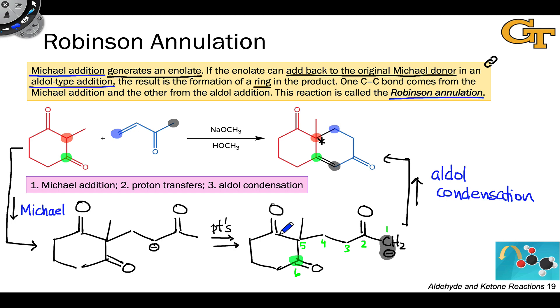Synthetically, the Robinson annulation is also fabulous, since we have a carbonyl group that remains in the product as well as an alpha-beta unsaturated ketone within the product. So this can be further elaborated to much more complex products through additional reactions.